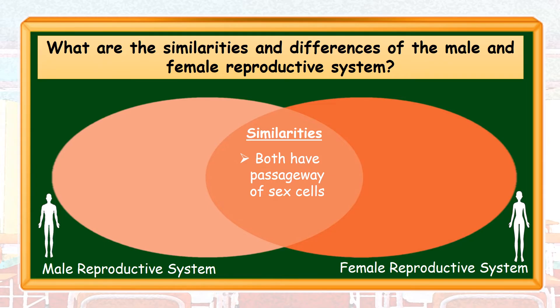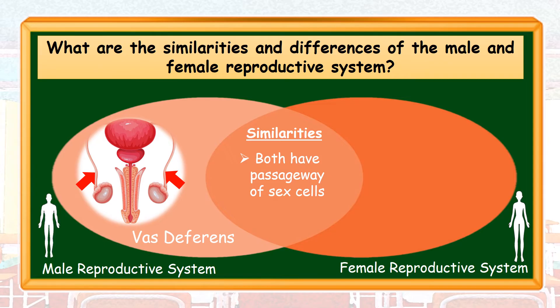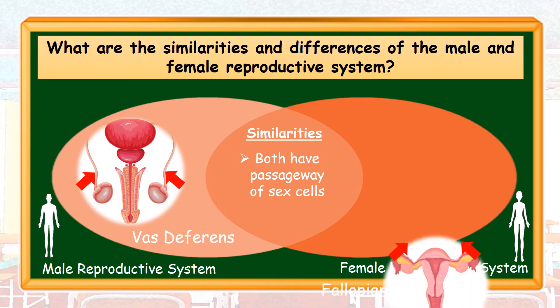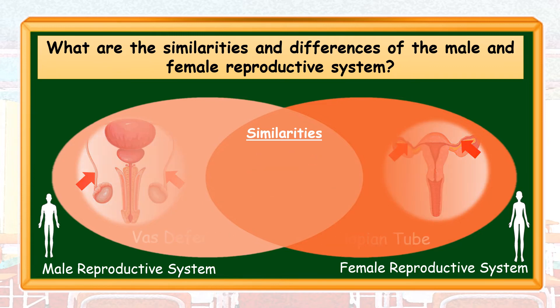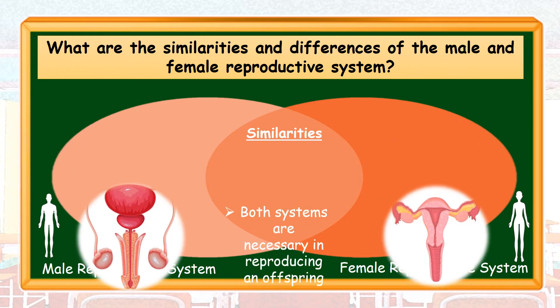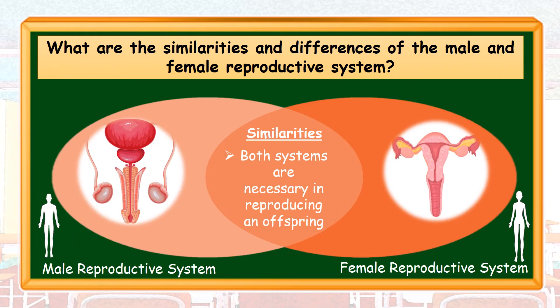Both systems have a passageway for sex cells. A pair of vas deferens is the passageway of sperm cells for males, while a pair of fallopian tubes are the passageway of the egg cell from the ovary. Both systems are necessary in reproducing an offspring.